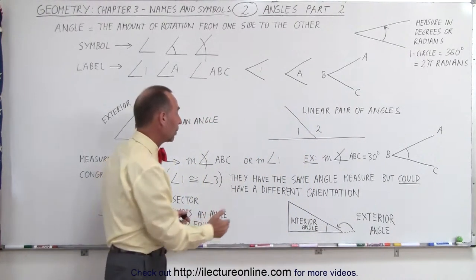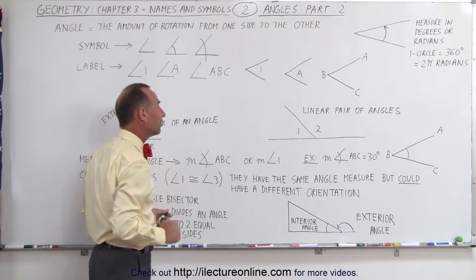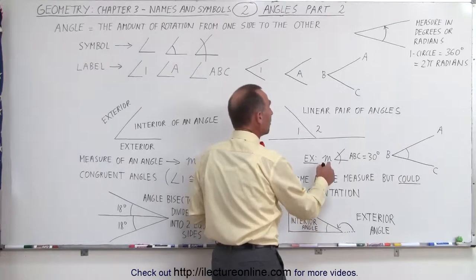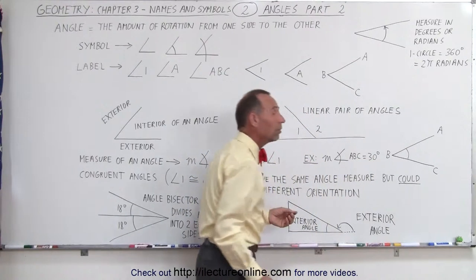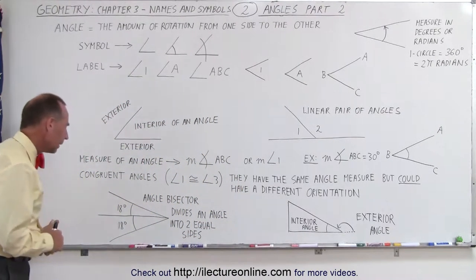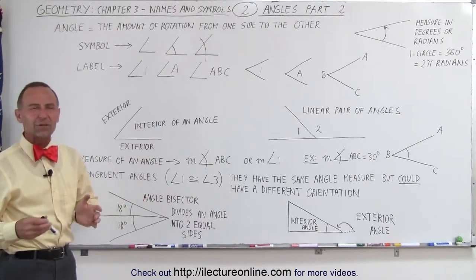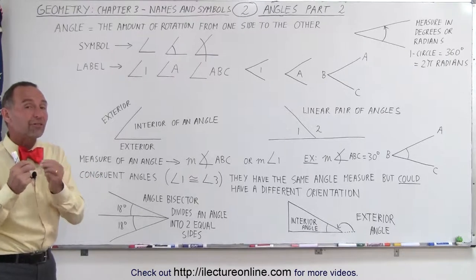Notice again A is the far end of the side, B is the vertex, C is the far end of the other side. So we're indicating that we're talking about this angle here, or we can simply label it with a number or letter. So we can have the measure of angle one or the measure of angle ABC. For example if it's 30 degrees then we write the measure of angle ABC equals 30 degrees. It could also be measured in radians.